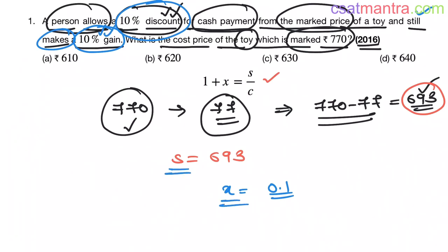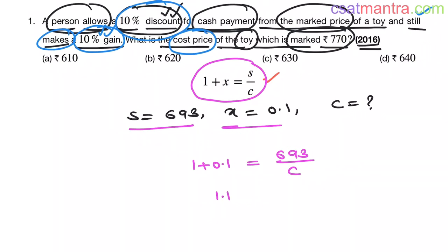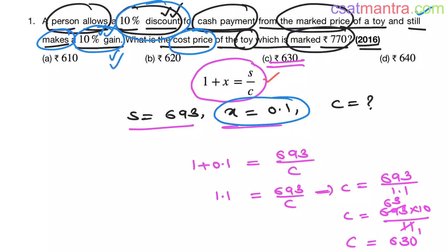We know S equals 693 and x equals 0.1. We want to find cost price C. Putting all these values into the equation: 1 plus 0.1 equals 693 by C, so 1.1 equals 693 by C, giving C equals 693 by 1.1, which is 693 multiplied by 10 by 11. That is our answer for C. We took x as positive because gain is profit and profit is positive.